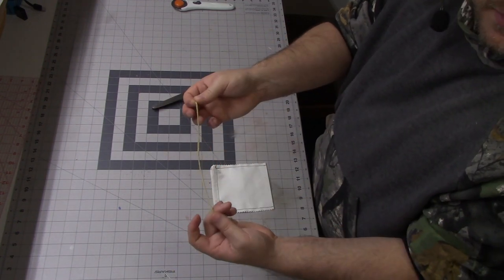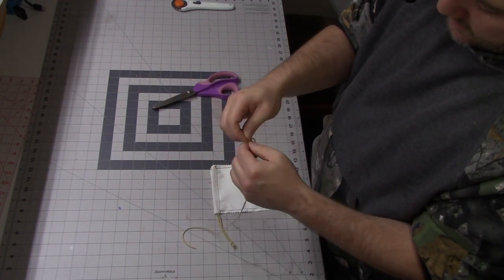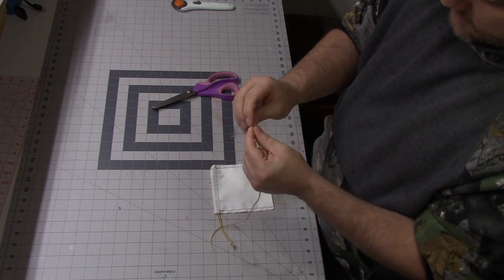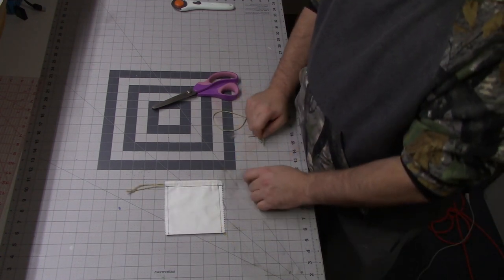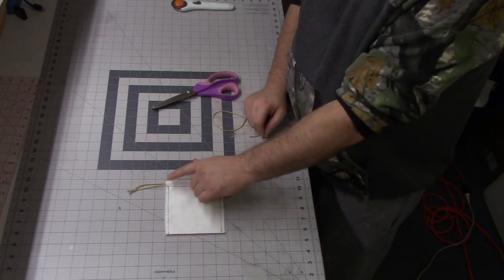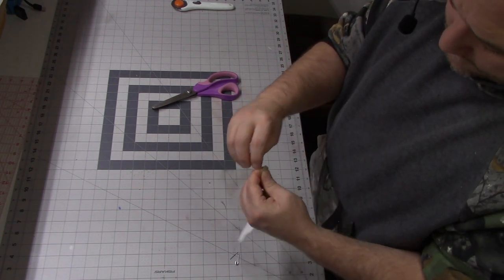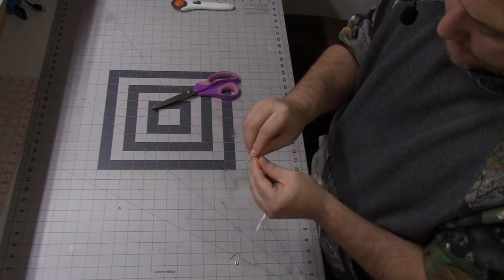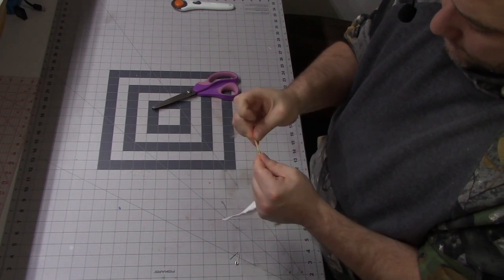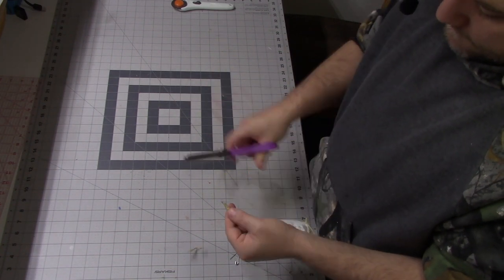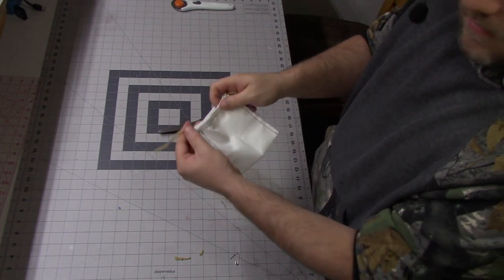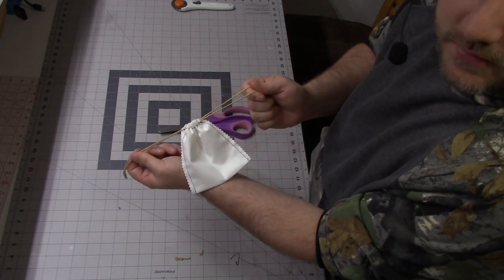Now I'm going to grab the other drawstring, tie a knot at the end and do the same thing. But this time I'm going to stop and start at the opposite end. Then just tie the knot. And now we have a little cinch up drawstring bag.